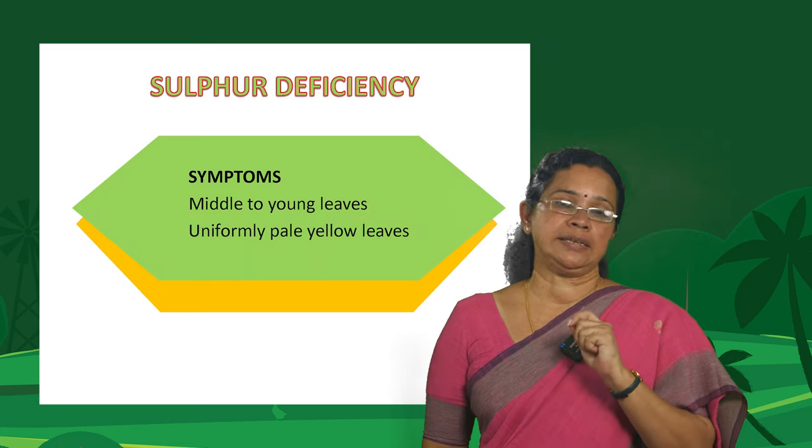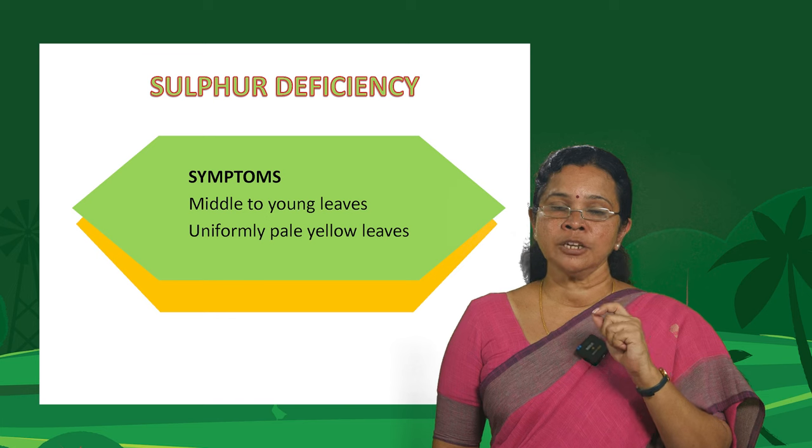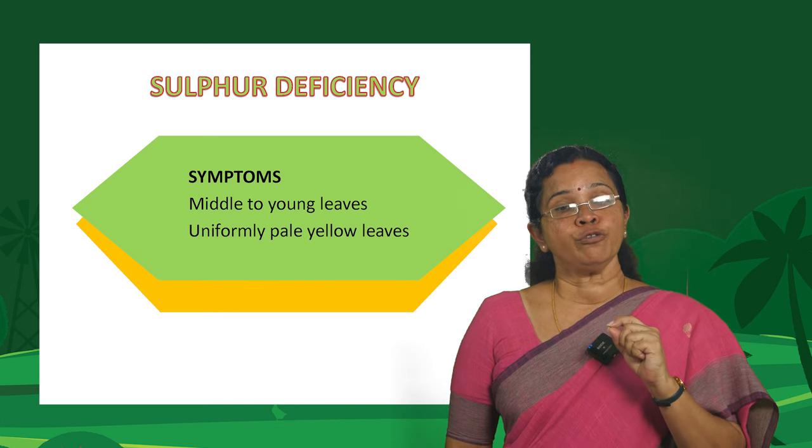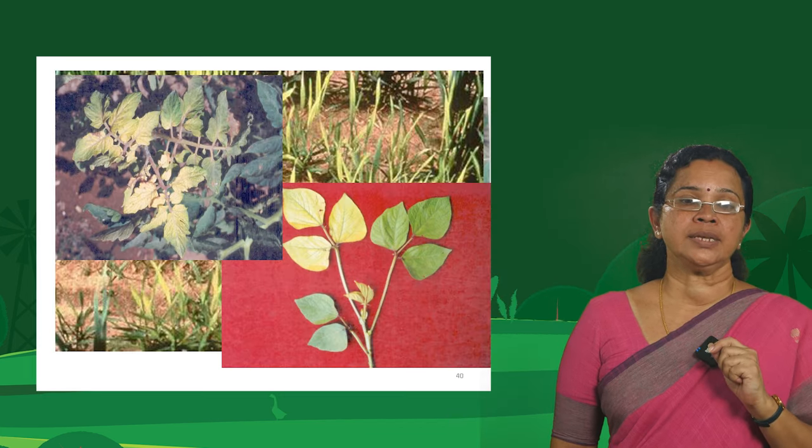Causes of sulphur deficiency include low organic matter content in the soil, highly weathered soils, large content of iron oxides, and sandy soils with leaching. The symptoms appear in the middle to young leaves — typical sulphur deficiency presents as uniformly pale yellow leaves. You can see that uniform pale yellow coloration in the pictures.